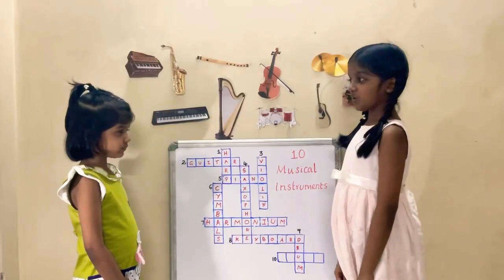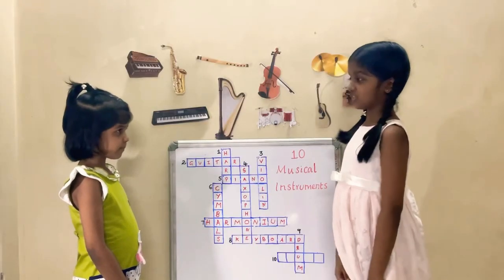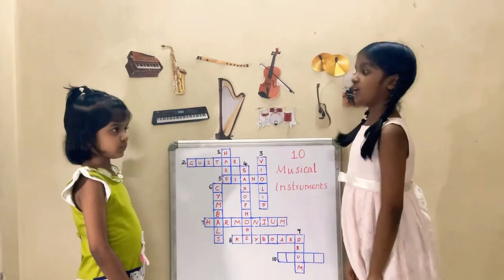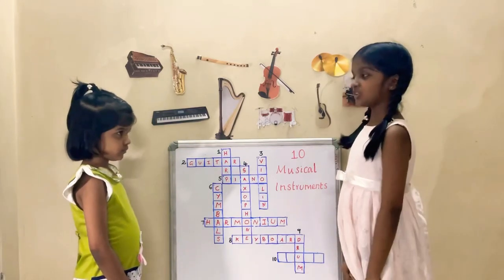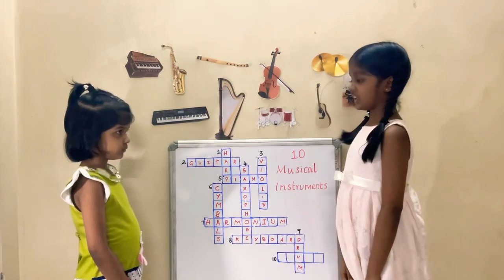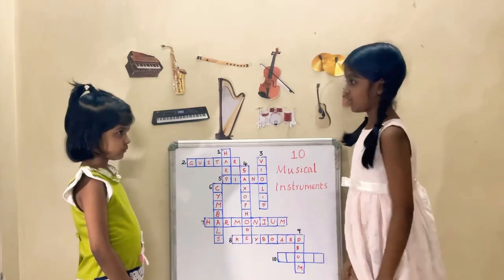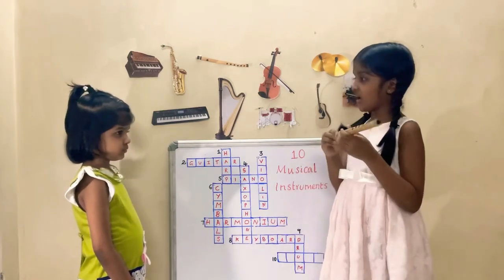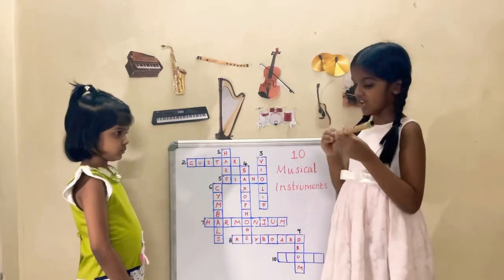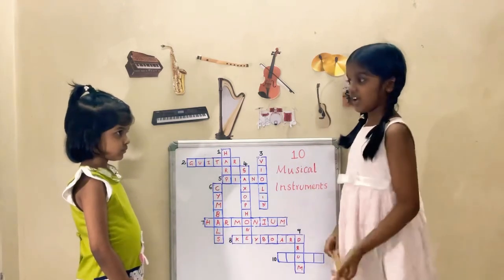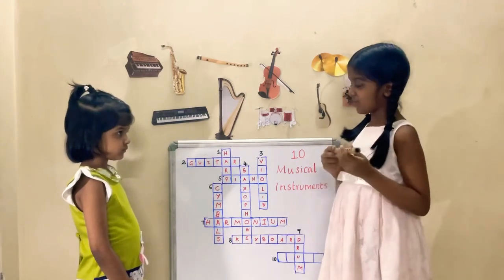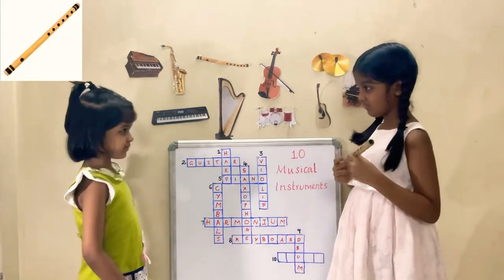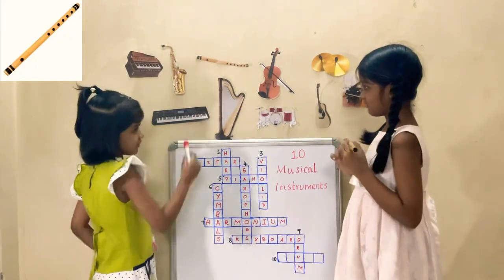The clue for the last musical instrument is: it is a woodwind instrument. It is also one of the oldest instruments in the world. The sound is produced by the vibration of air inside the hollow tube. Can you guess the name of the instrument? Yes, the name of the instrument is flute.